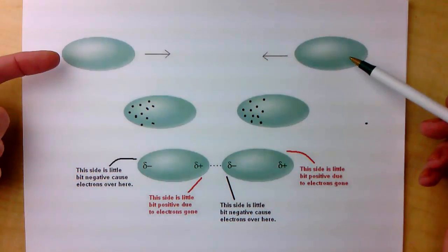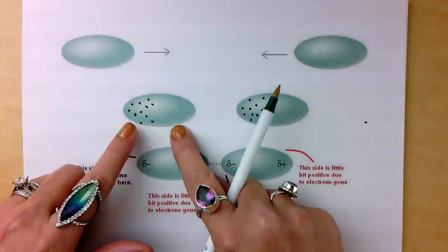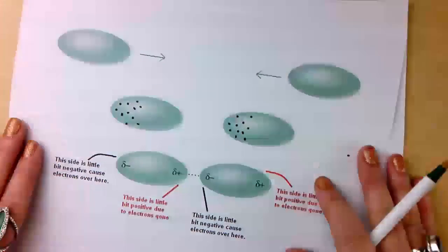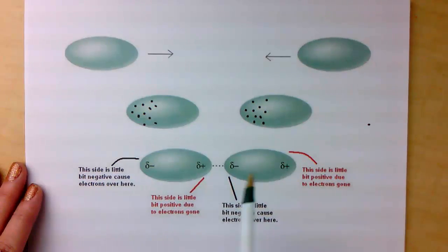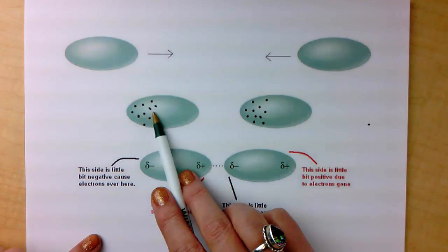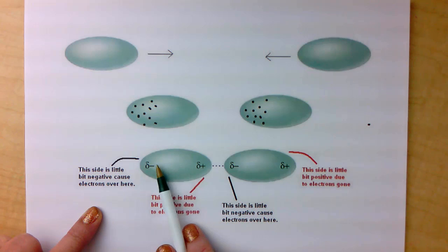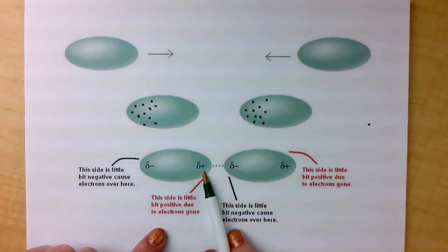As these two nonpolar molecules approach each other, let's say that in the first one, the electrons which are going around all kind of congregate to one side temporarily. That's the key word, temporary. So the electrons are over here. That makes that side a little bit negative because electrons are negative and they're on this side. By default, this other side has to be a little bit positive because the electrons are gone.